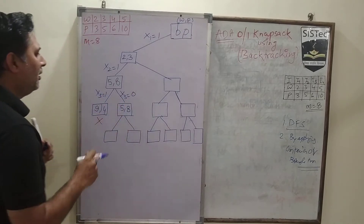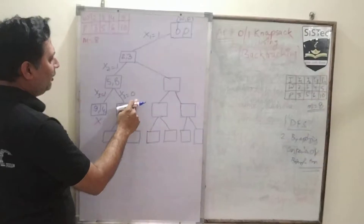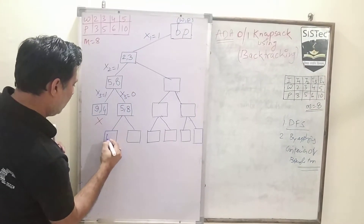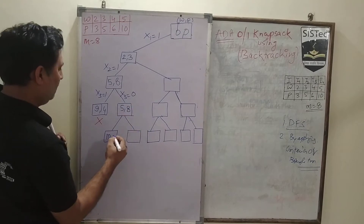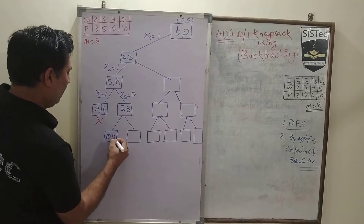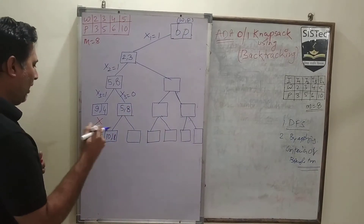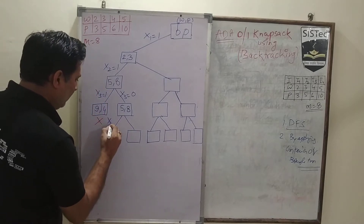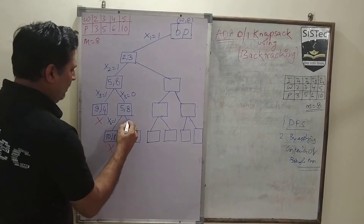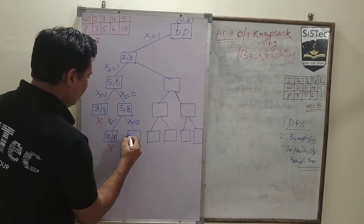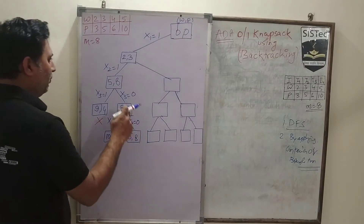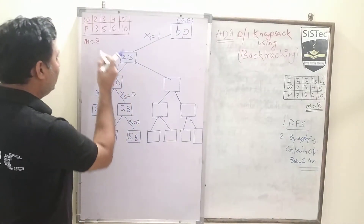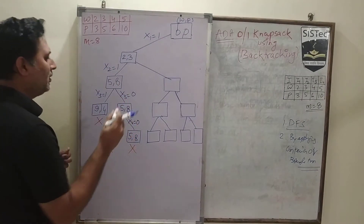After rejecting the 3rd weight, in DFS manner we can go for another option: the 4th weight. So the total weight becomes 10 and profit becomes 18. Again we have exceeded the capacity, so we will not consider this. We have considered all options and have not reached the capacity of 8, so we discard this node as well.